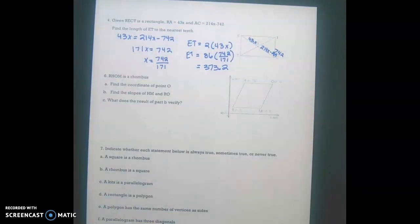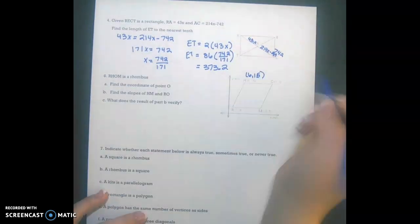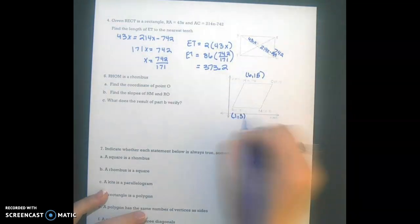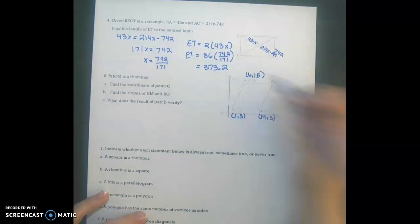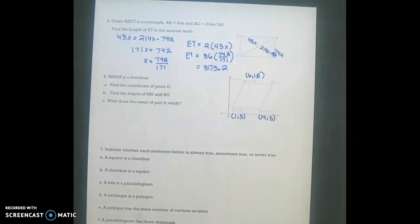Now, number six, we have a rhombus, and this is a little light, so I'm going to rewrite my coordinates here, and then we don't know the coordinates of O. That's a 15. So we want to first find the coordinates of O.